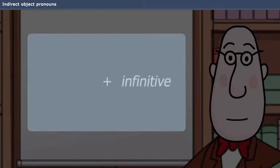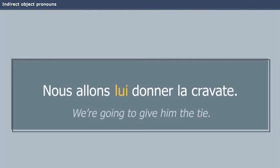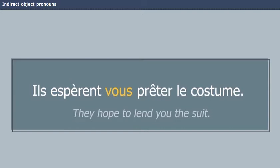Attention. When an infinitive follows a conjugated verb, the indirect object pronoun comes before the infinitive. Nous allons lui donner la cravate. Ils espèrent vous prêter le costume.